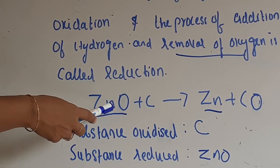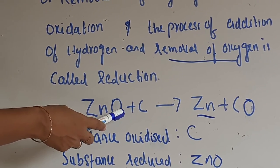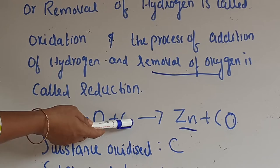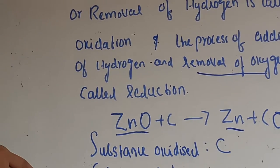So here ZnO plus C - please check ZnO. ZnO is the one who is contributing oxygen to carbon. Right? So ZnO is the oxidizing agent.